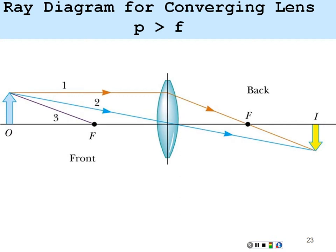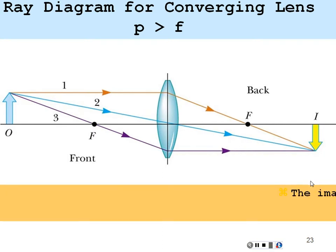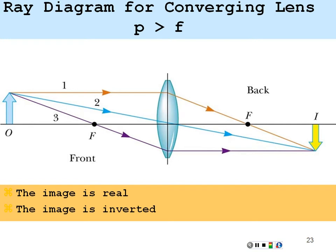A ray through the first focal point also exits parallel and passes through the same image point. This image will be real because it's comprised of actual outgoing rays from the lens, and it's inverted. Q is positive, P is positive, so magnification is negative Q over P — meaning the image is inverted.